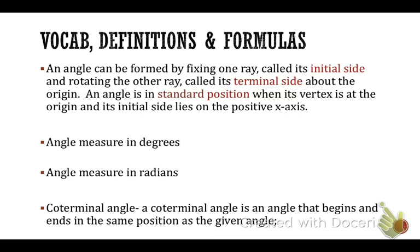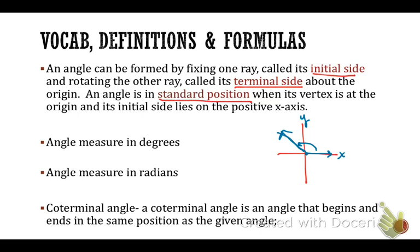An angle can be formed by fixing one ray called its initial side and rotating the other ray called its terminal side about the origin. An angle is in standard position when its vertex is at the origin and its initial side lies on the positive x-axis. In trigonometry, we think of angles as a rotated ray — the initial ray lies on the positive x-axis, starts rotating, and stops at a certain point.